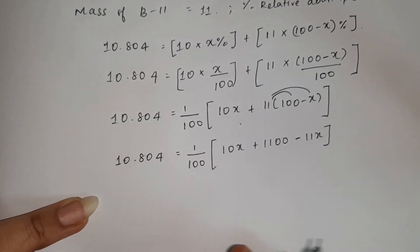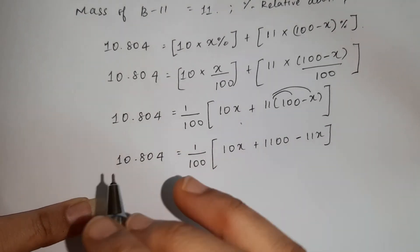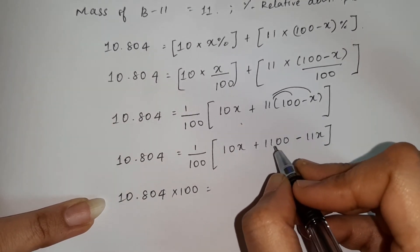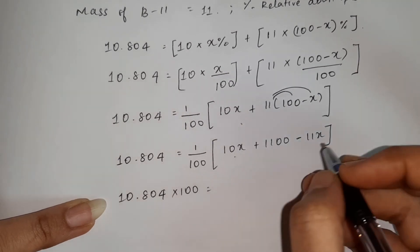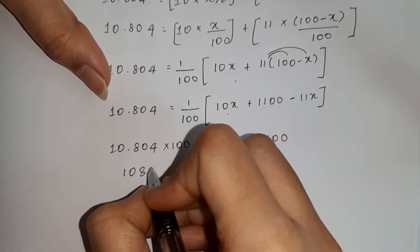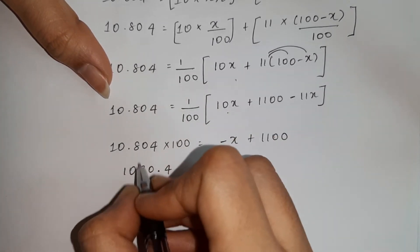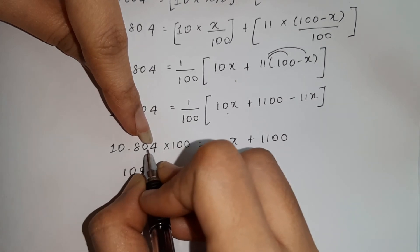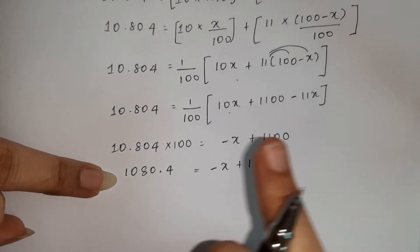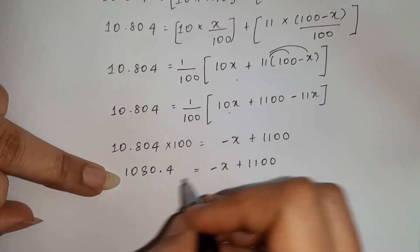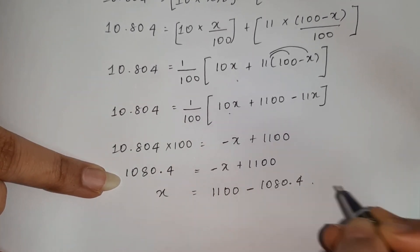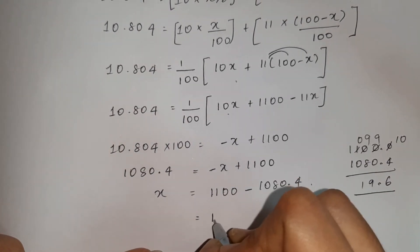Multiplying: 1080.4 = 10x + 1100 − 11x. Collecting x terms: 1080.4 = −x + 1100. Therefore x = 1100 − 1080.4. Subtracting, we get x = 19.6. So the value of x is 19.6.